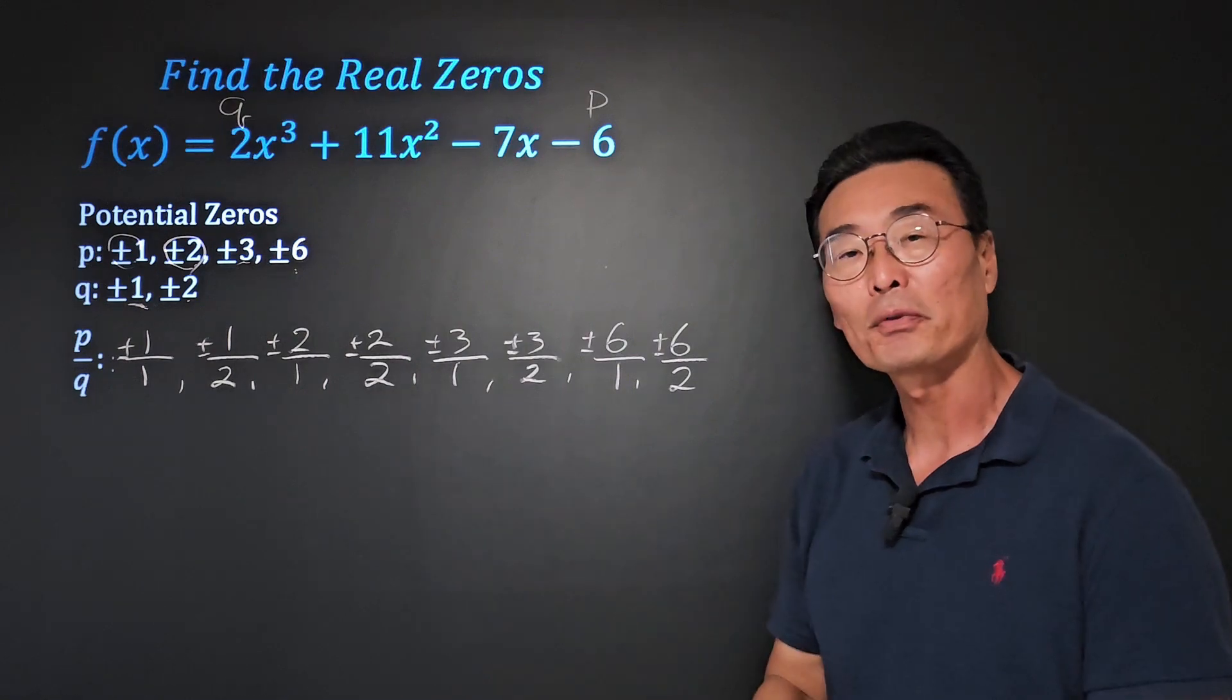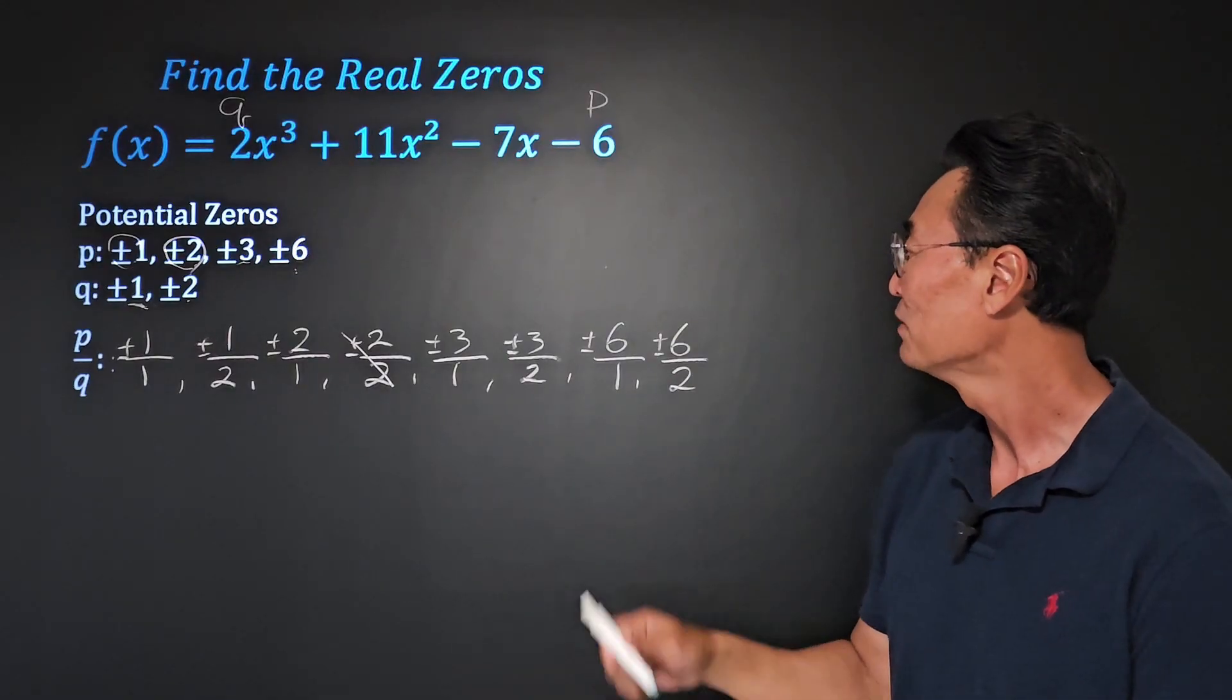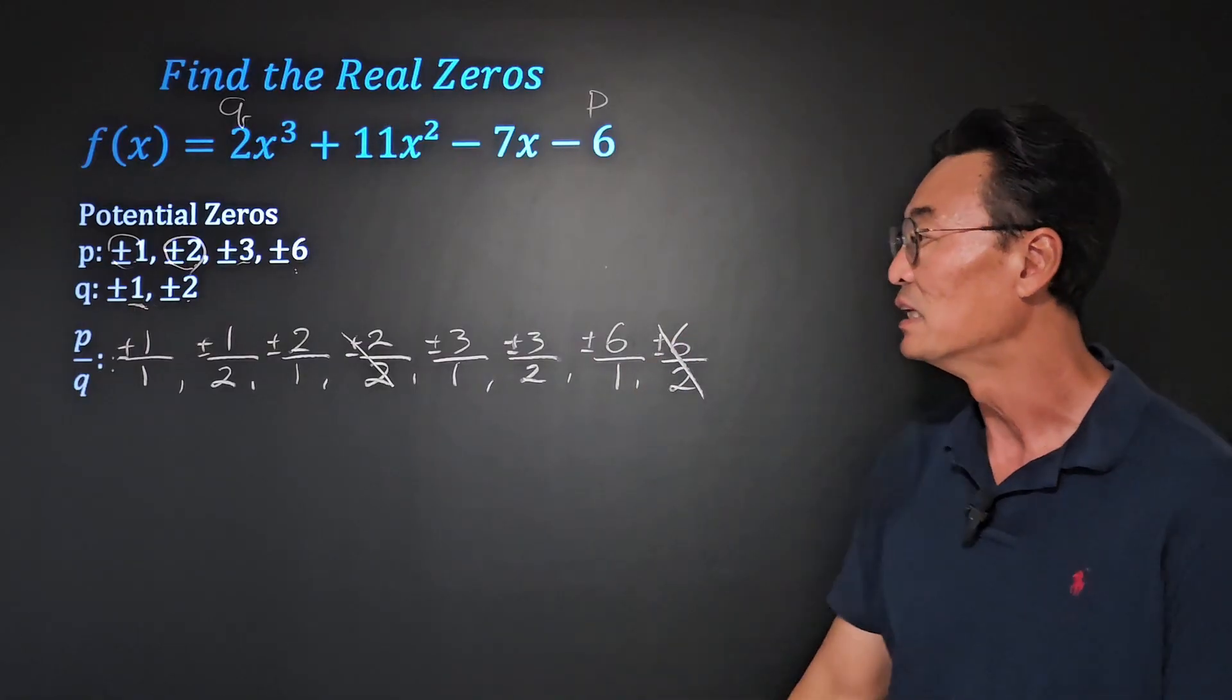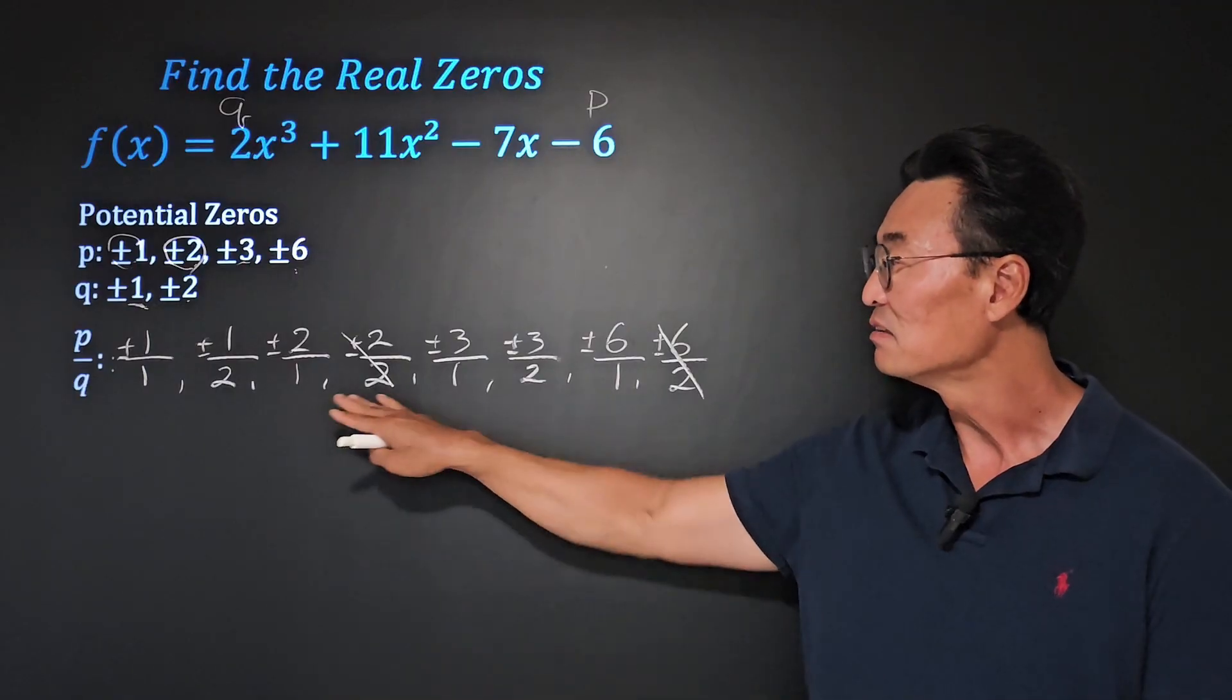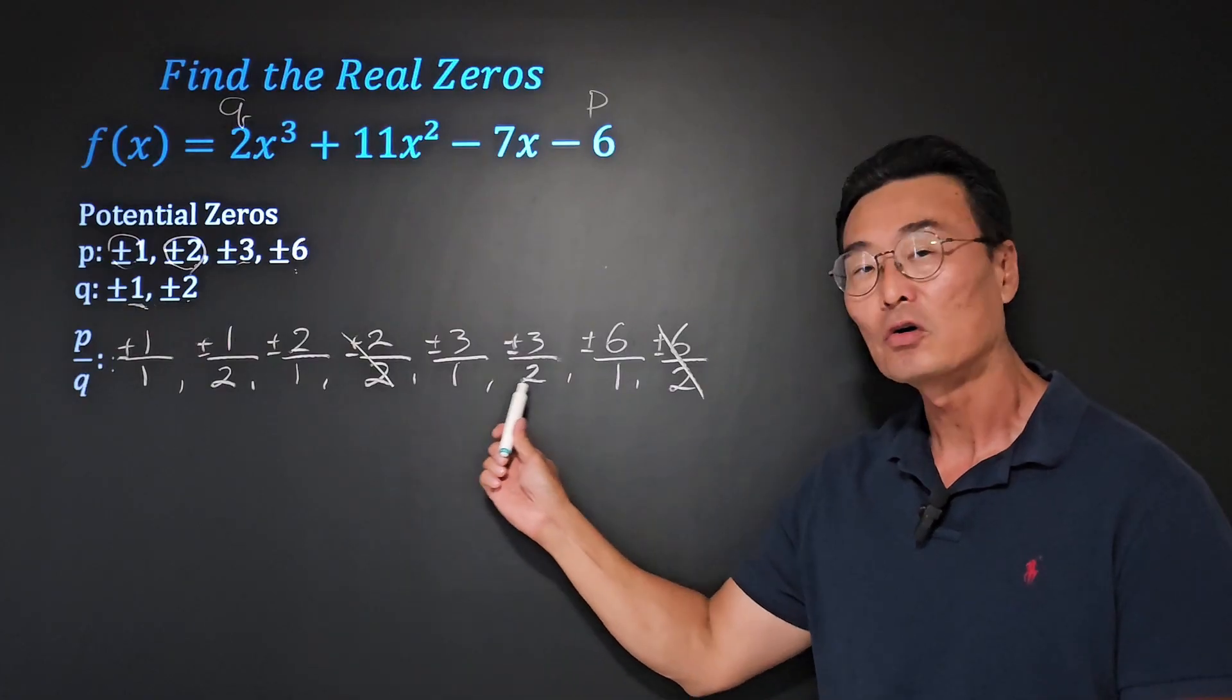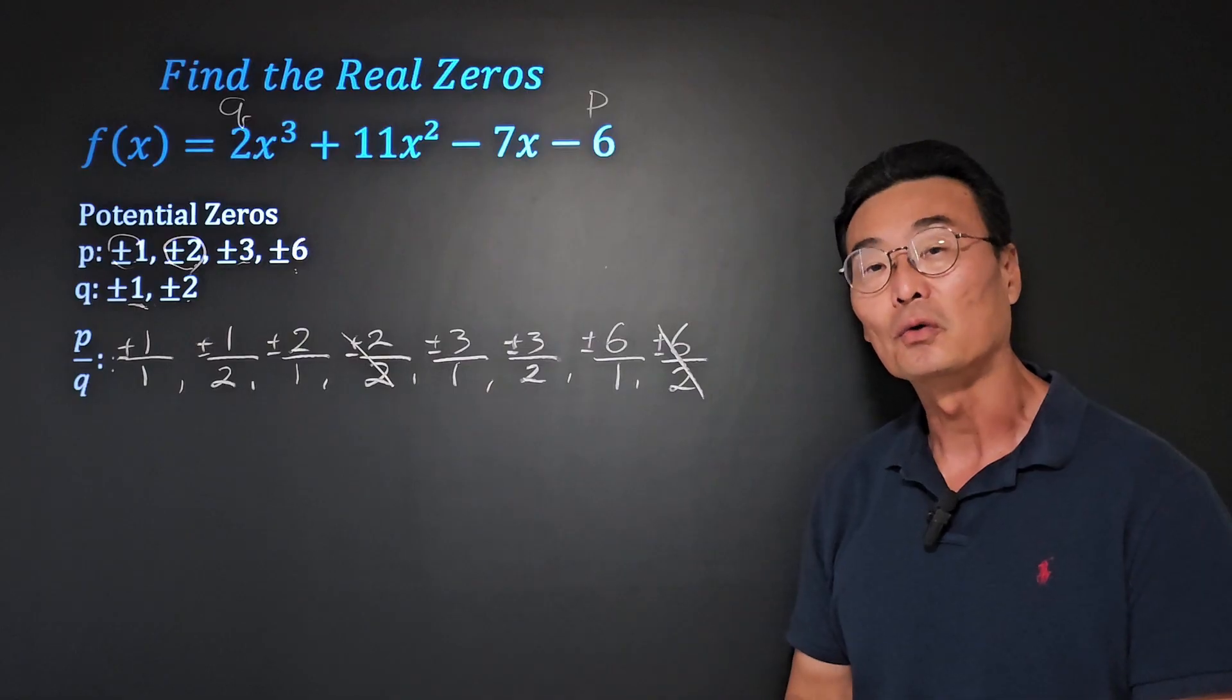Notice whether you have 1 over 1 or 2 over 2, they both represent 1, so we're going to eliminate this from the list. And we also have 6 over 2, that's 3, which we have as 3 over 1, so we're going to eliminate that from our list as well. So these are going to be our possible or potential zeros, meaning one or more of these numbers that we have listed for p over q are going to be the actual zeros or real zeros of this polynomial function.